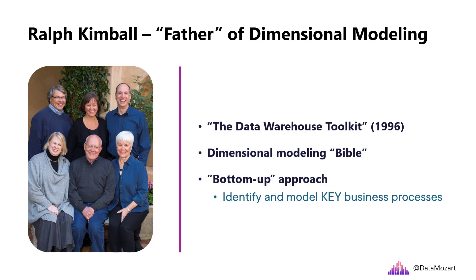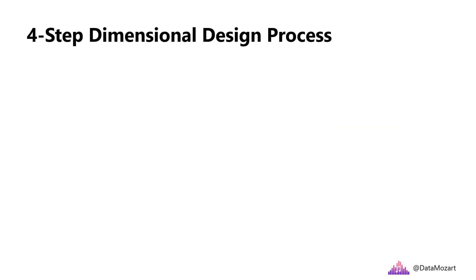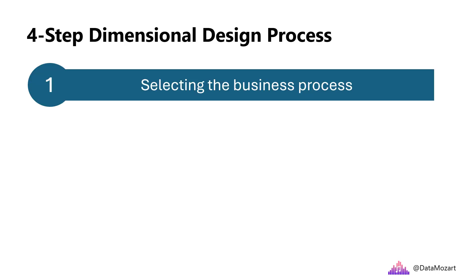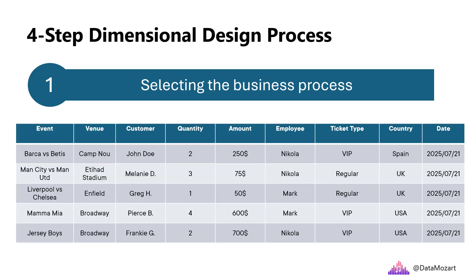The focus is on identifying key business processes within the organization and modeling these first, before introducing additional business processes. Kimball's approach is fairly simple and consists of 4 steps, also known as the 4-step dimensional design process. Each step is based on a decision. It starts with selecting the business process. Let's use the example that we are selling a ticket for a sports event — this is our business process.